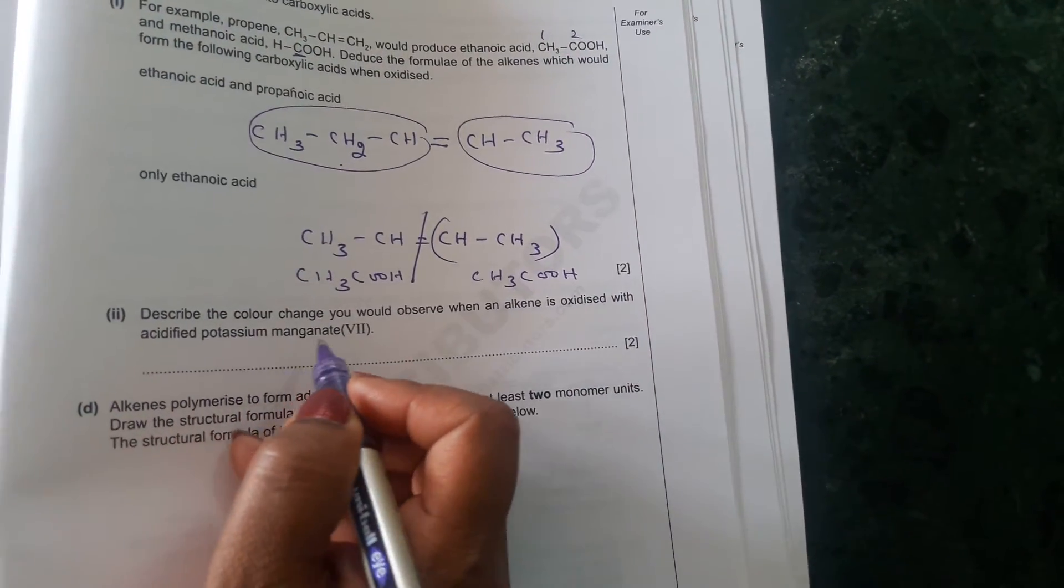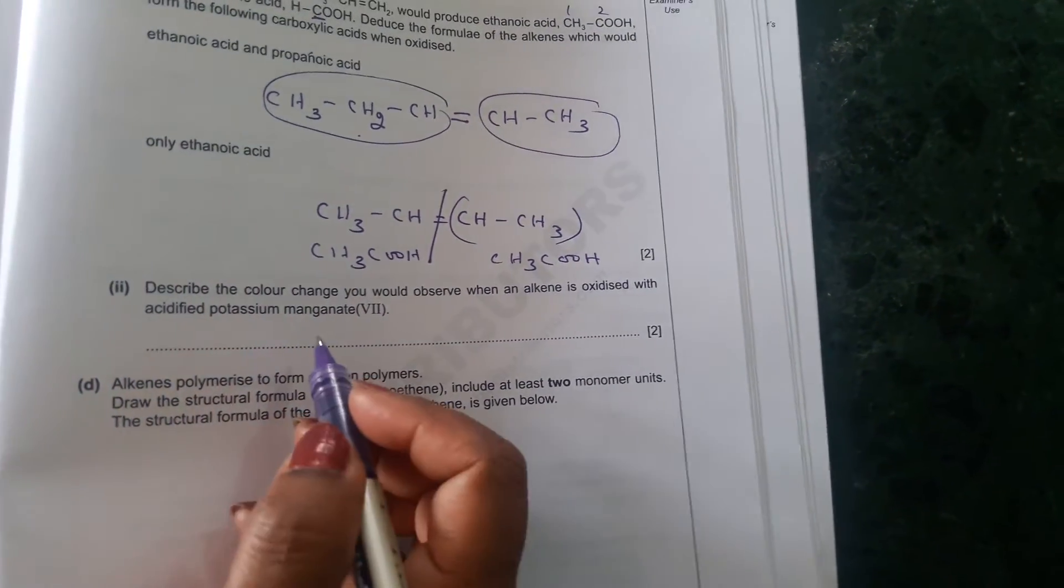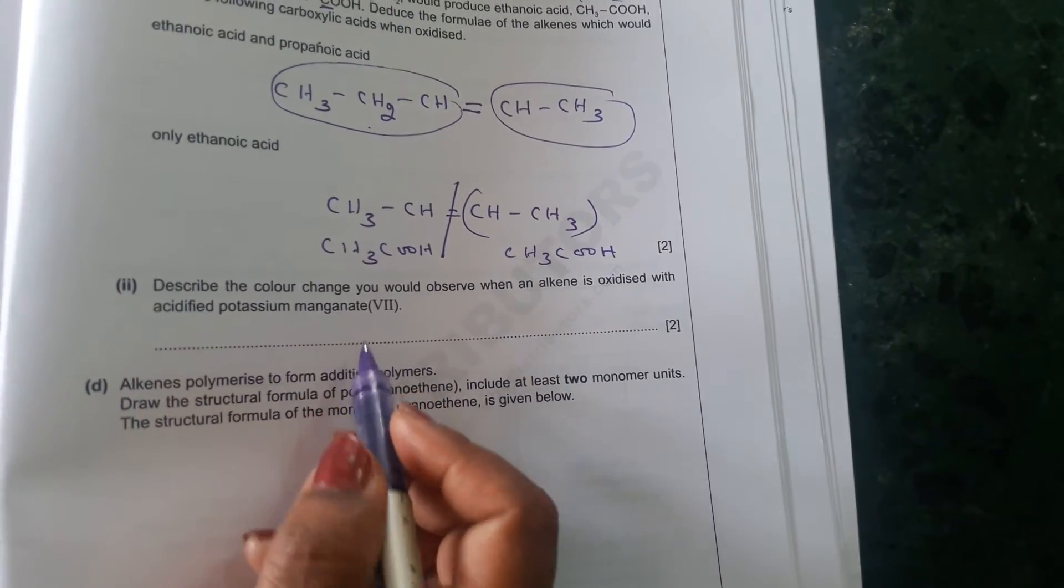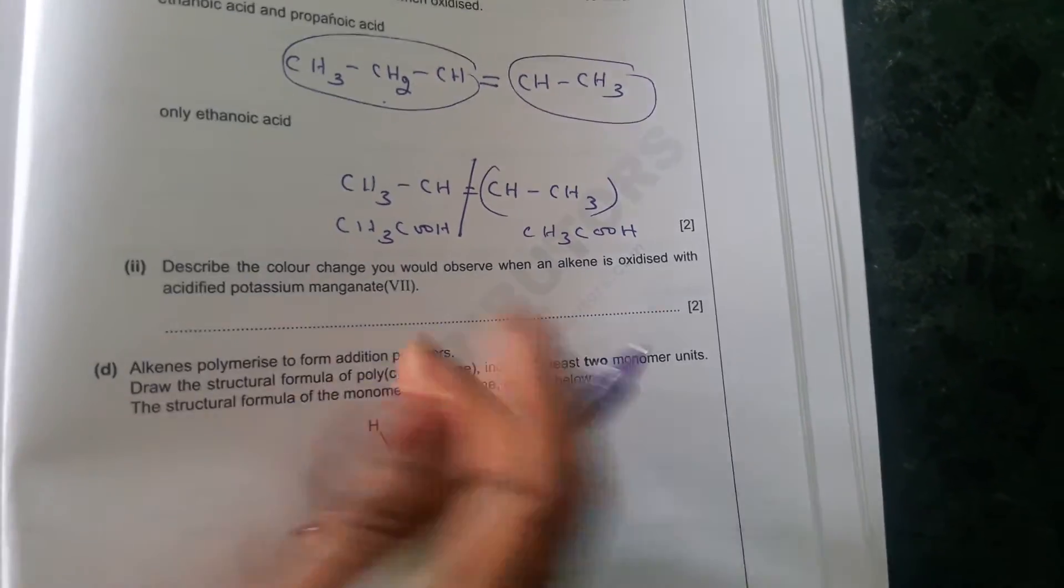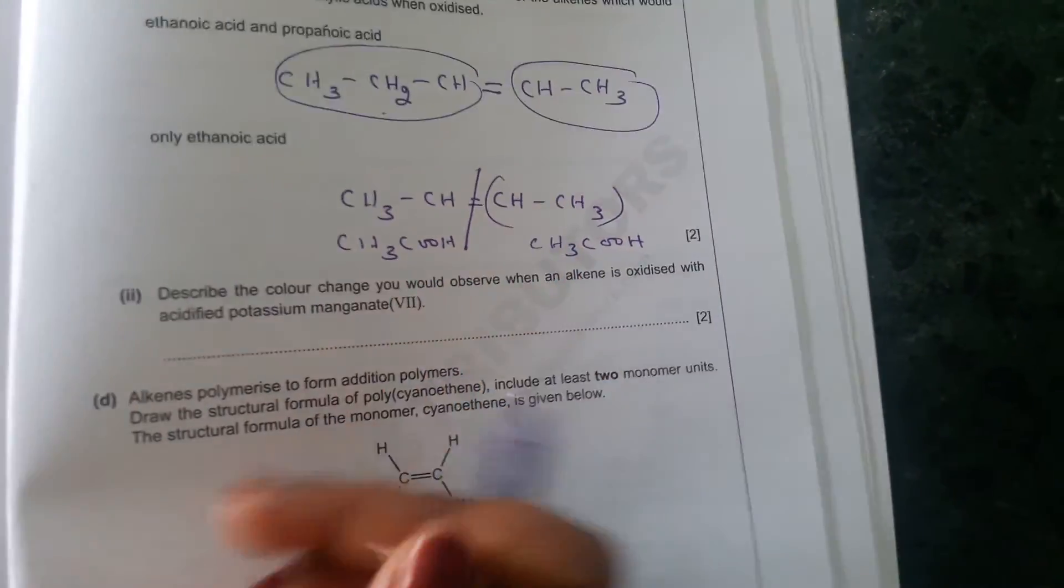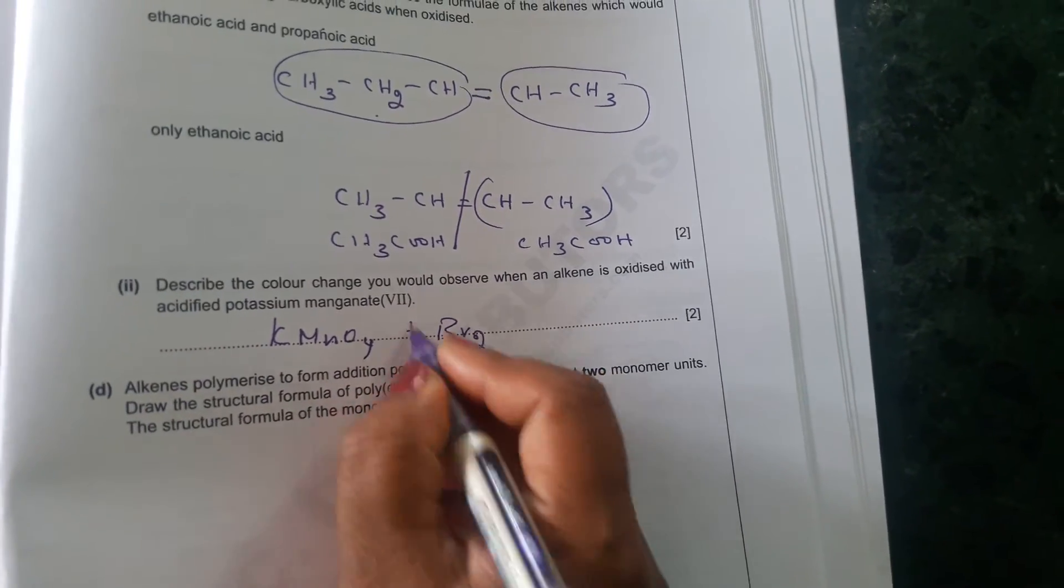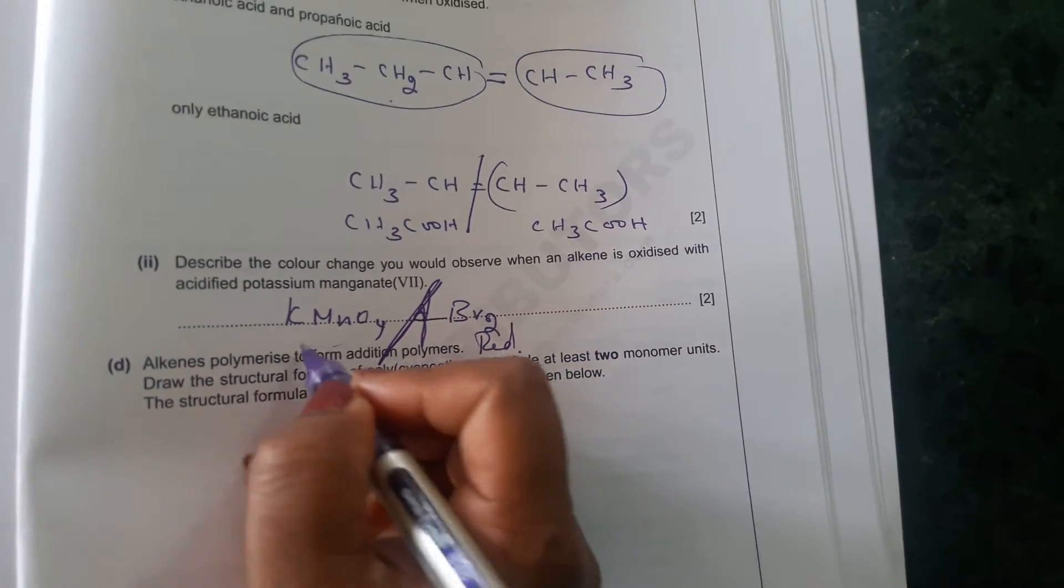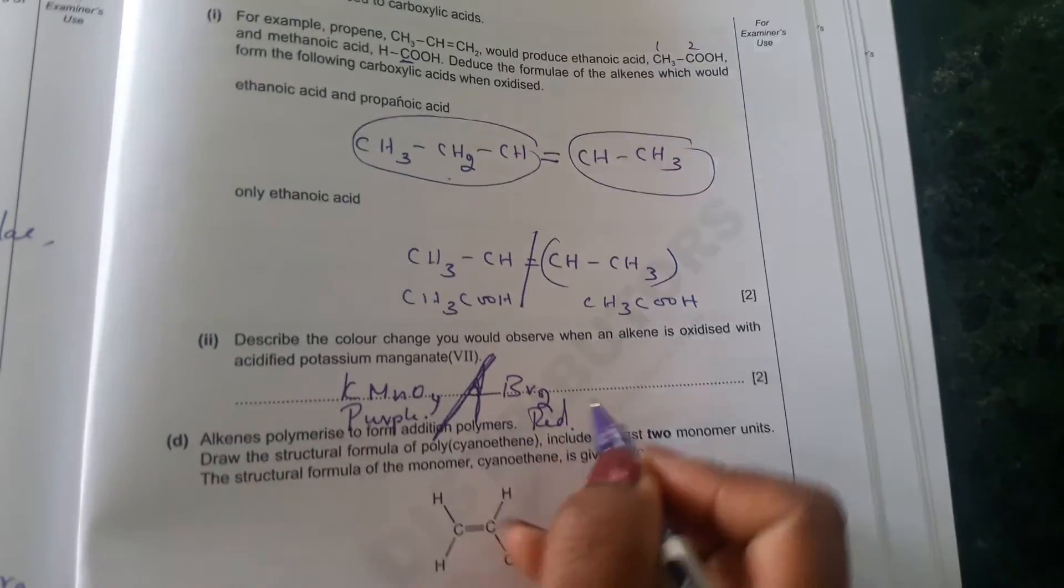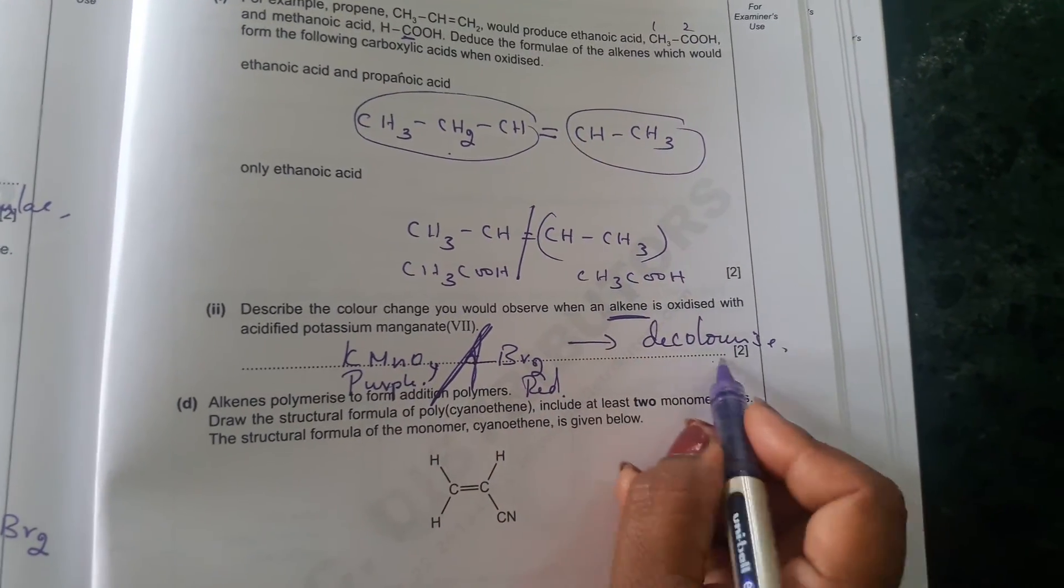And then, describe the color change you would observe when an alkene is oxidized with acidified potassium permanganate. Already we know this, bromine solution or potassium permanganate. These two are the confirmatory test to confirm whether the given solution is alkene or alkane. Because when you add with alkene, KMnO4 is given in this paper. But even Br2 also the same thing. So this is red color, brownish red color. And this is purple color actually. So the purple color or red color, both will decolorize. When you add it with alkene, it decolorizes. It becomes colorless.